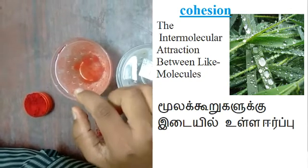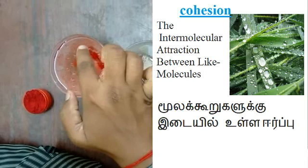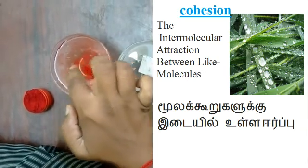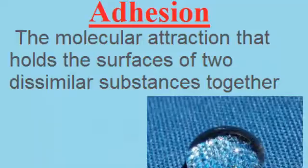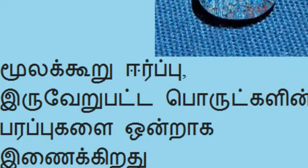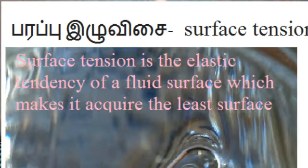What we see is water at the surface forming a layer. The next is cohesion between liquid molecules and solid molecules. Cohesion at the surface forms this layer. The cohesion creates the surface layer.